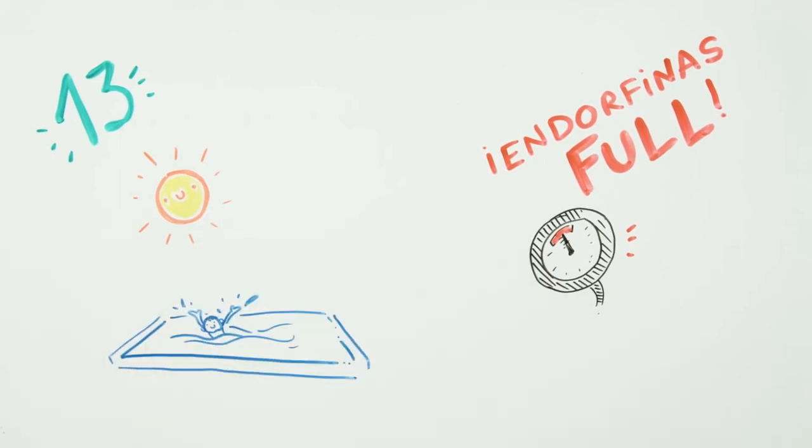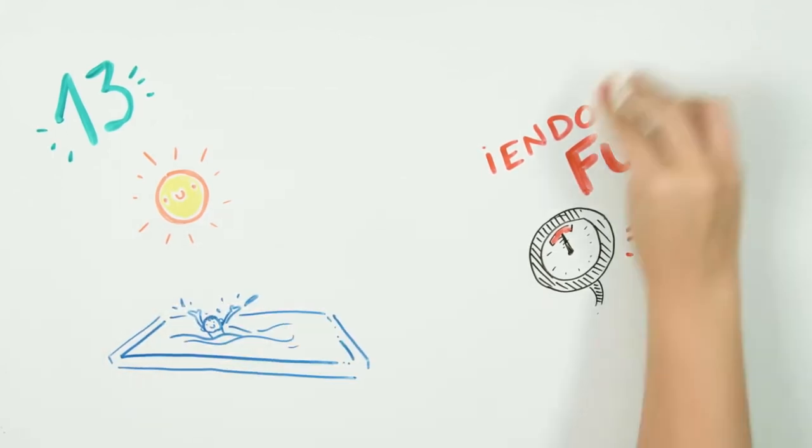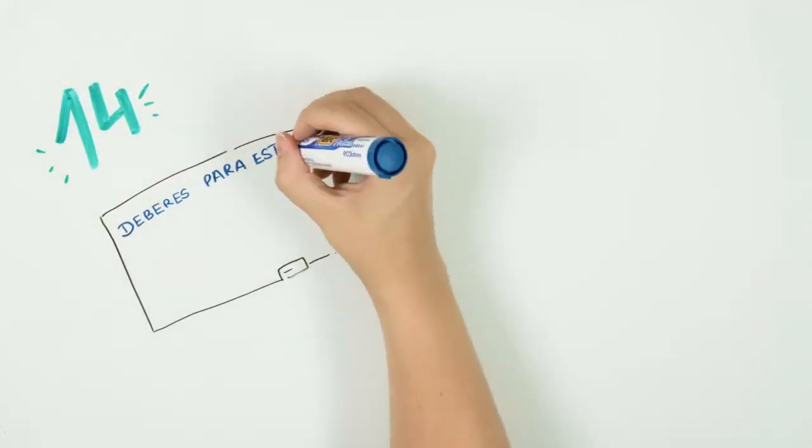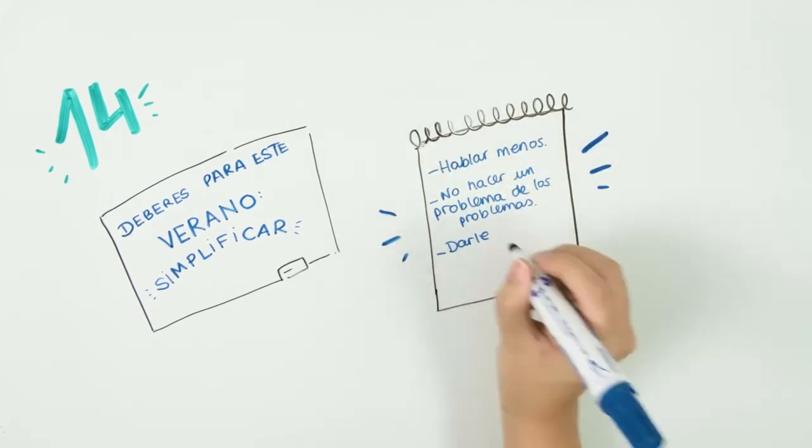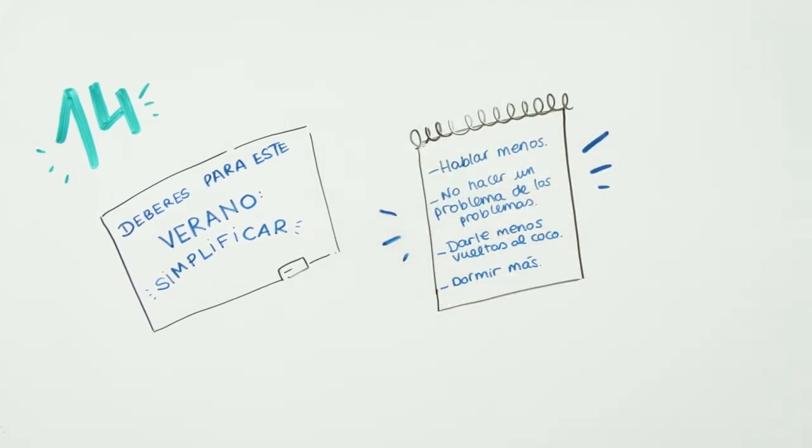Fourteenth: Learn to simplify. At leisure, studies, or work, we tend to complicate our lives with things that do not always help us to be happier. But you already have homework for this summer: list all the things you don't like and make the change. It is not much, but you have to start with something.